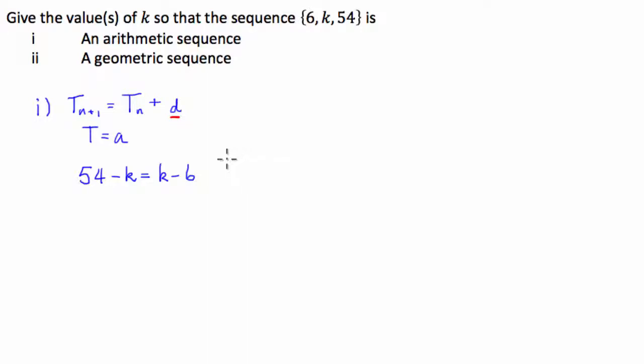So now we've set up an equality here, we can just use some basic algebra and solve it. I'm going to take the k's to the right-hand side where I have 2k, so I'm going to add k to both sides, and then add 6 to the other side. So 54 + 6 = 60, and we can divide both sides by 2, and we have k = 30.